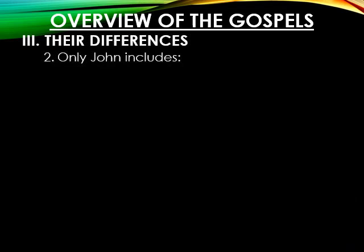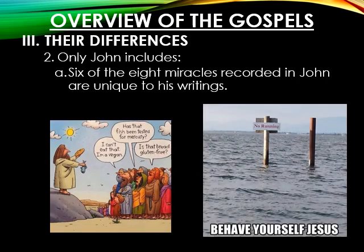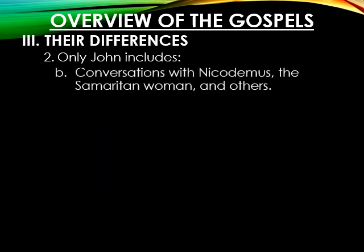Let's look at things only John includes. Letter A: six of the eight miracles recorded in John are unique to his writings. The only two miracles John records that also appear in the Synoptics are the feeding of the 5,000 and Jesus walking on water. The other six are only found in the Gospel of John. Additionally, conversations with Nicodemus, the Samaritan woman, and many others are only recorded in John's Gospel.